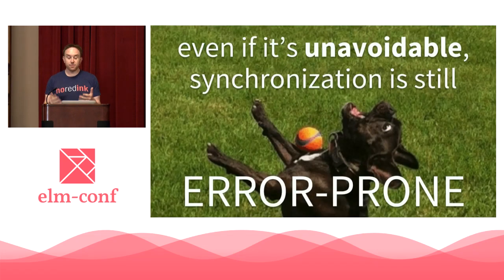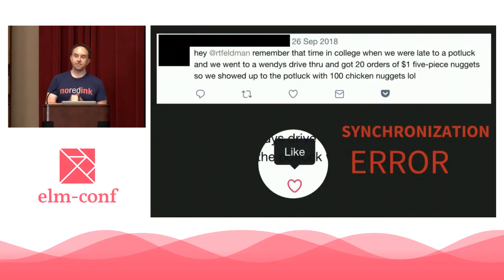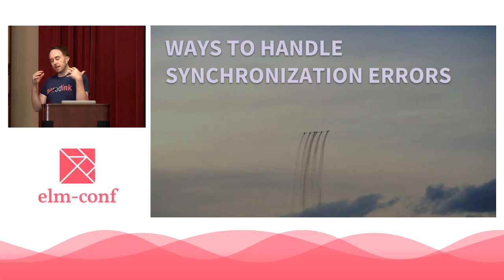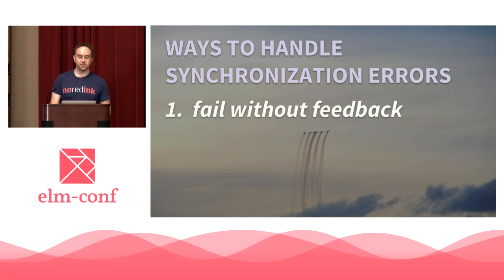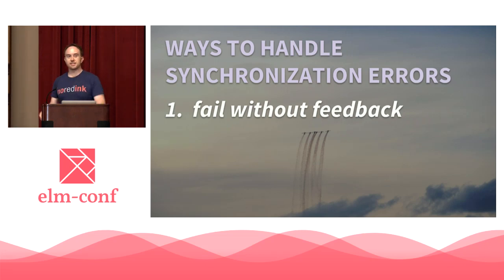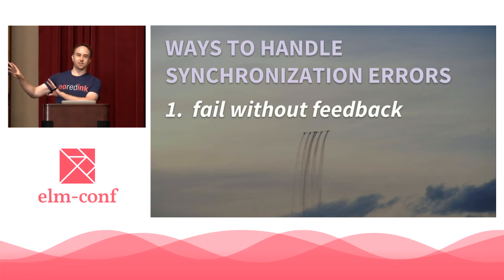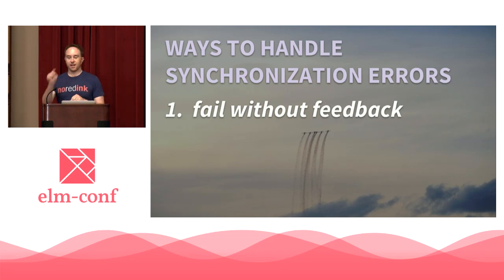Even if it's unavoidable, synchronization is still error-prone, so we'd like to handle these errors as gracefully as possible. There are different levels to this. The worst is failing without feedback — the tweet gets deleted, I hit like, and nothing happens. Or there's optimistic updates, where you update client state and assume it works on the server. That can be even worse: you hit like, the animation plays, and then later it's just gone.